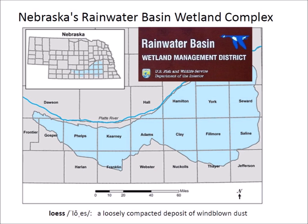South-central Nebraska is predominantly a large plain of fluvial sands and gravels deposited on the southern side of the Platte River. All the terrain is covered by several meters of loess, which is a loosely compacted deposit of windblown dust. The area has many shallow lakes, marshes, and other wetlands known as the Rainwater Basin wetlands.